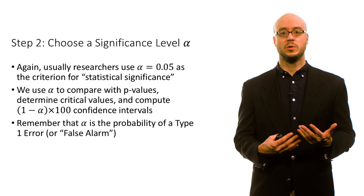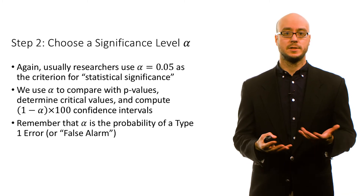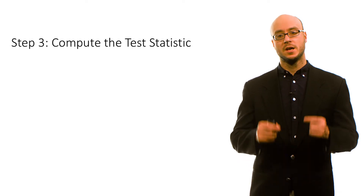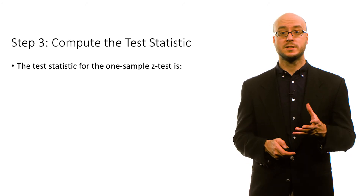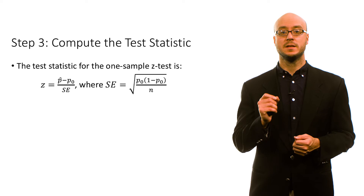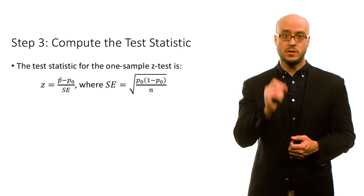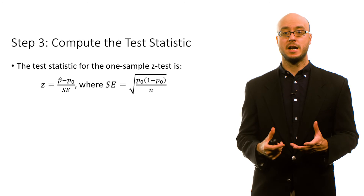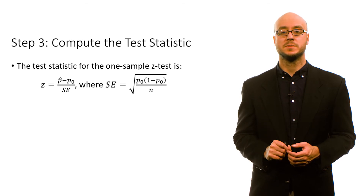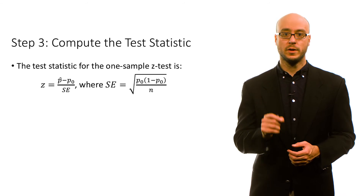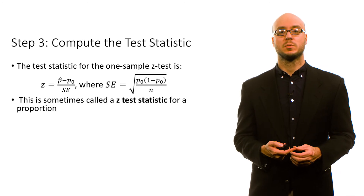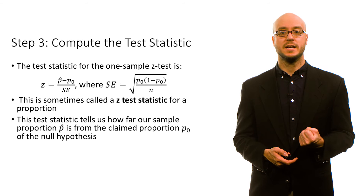For step three, we compute the test statistic. For a one-sample z-test for a sample proportion, the z-test statistic is simply p-hat — the sample proportion — minus p₀, the claimed value of the population proportion, divided by the standard error. The standard error is calculated as the square root of p₀ times (1 − p₀) divided by n. For a hypothesis test, we typically calculate that standard error using the claimed value of the population proportion. This is called the z-test statistic for a proportion.